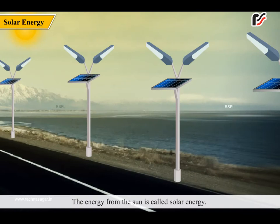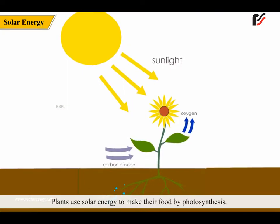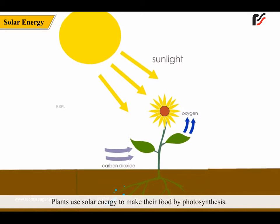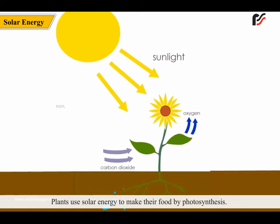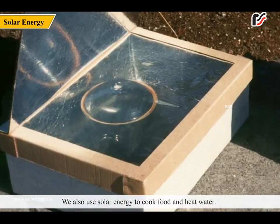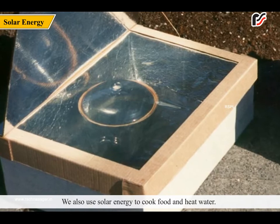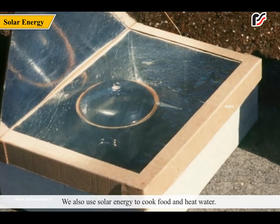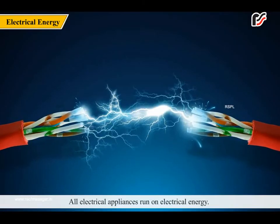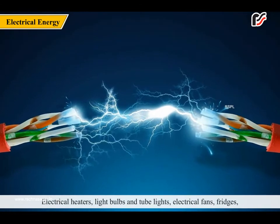The energy from the sun is called solar energy. Plants use solar energy to make their food by photosynthesis. We also use solar energy to cook food and heat water.